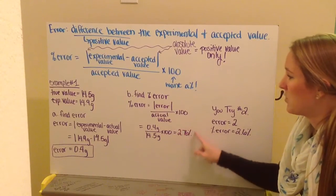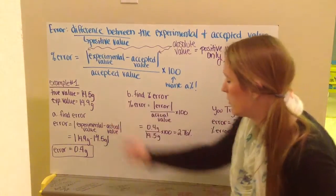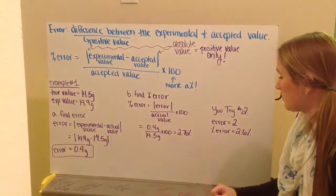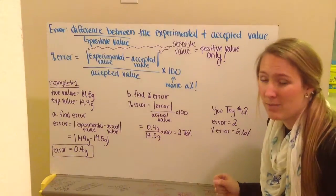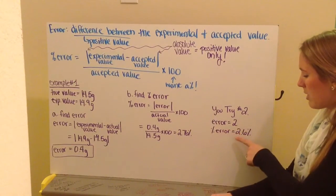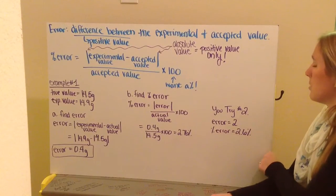Remembering my significant figures, 3 here, 3 here, I need 3 significant figures in my final answer. Go ahead and try number 2. You should get an error equal to 2, and a percent error equal to 2.6%.